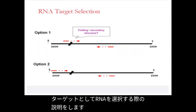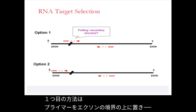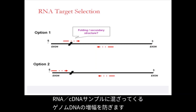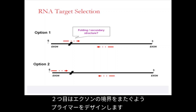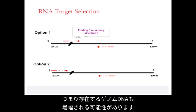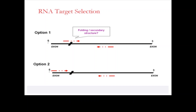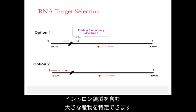Here is some more information on selecting RNA as a target — two options. Option one: position your primer over an exon boundary, which prevents the amplification of genomic DNA that may contaminate the RNA/cDNA sample. Option two: design the primer to span exon boundaries, which means any genomic DNA present may also be amplified. However, this can be addressed by melt curve analysis to identify larger products containing an intronic region.